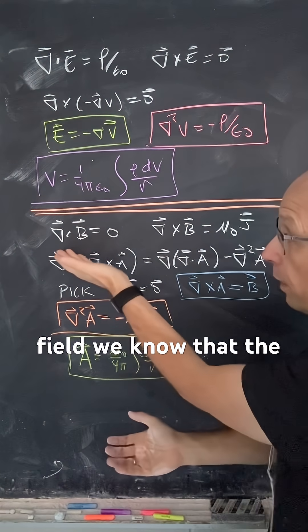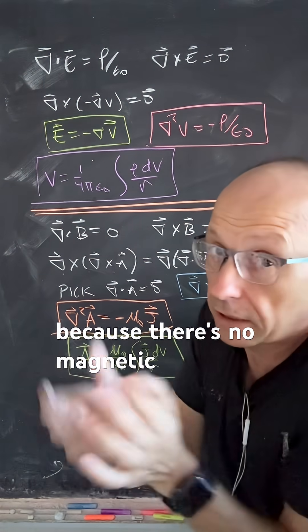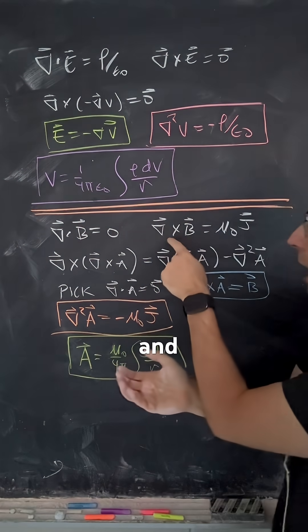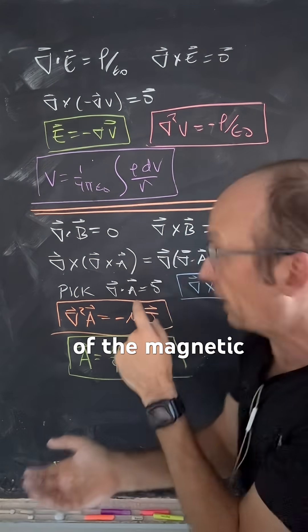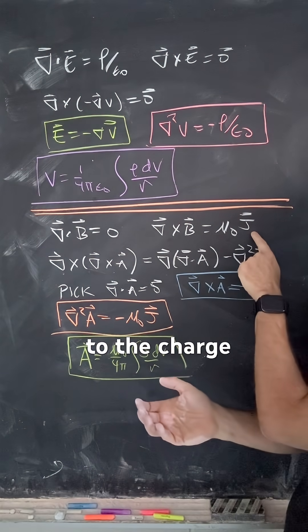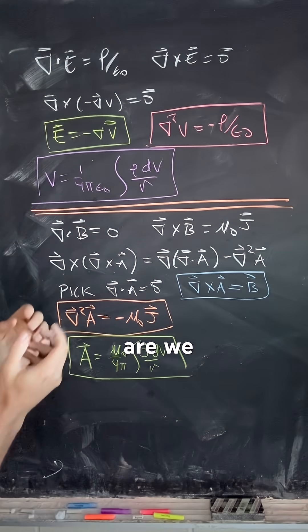Now, if we do the same thing with the magnetic field, we know that the divergence in the magnetic field is zero because there's no magnetic monopoles. And with that, we get Ampere's law, which says that the curl of the magnetic field is related to the current density.